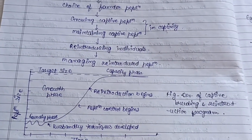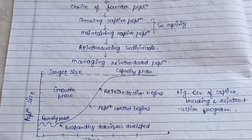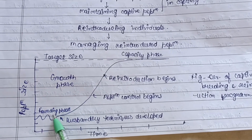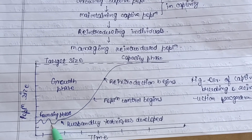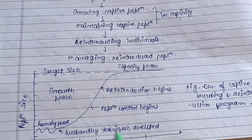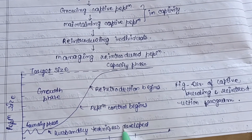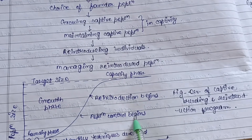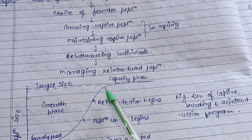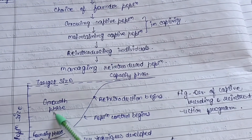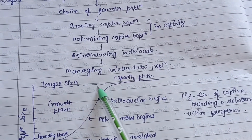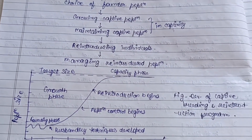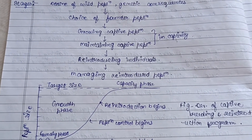This diagram shows the development of a captive breeding and reintroduction program. The first is the founding phase, where population size is very low. Then husbandry techniques are developed and the population gradually increases — population control begins. Reintroduction begins once the growth phase increases sufficiently, and finally the target size is achieved in what is called the capacity phase.